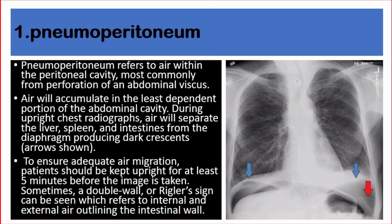I'll begin with pneumoperitoneum. Pneumoperitoneum refers to air within the peritoneal cavity, most commonly from perforation of an abdominal viscus. Air will accumulate in the least dependent portion of the abdominal cavity. During upright chest radiographs, air will separate the liver, spleen, and intestines from the diaphragm, producing dark crescents.